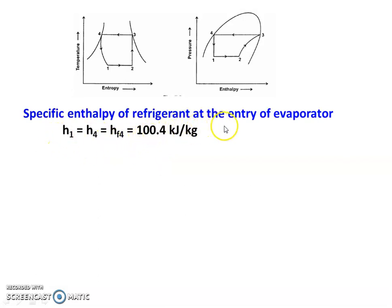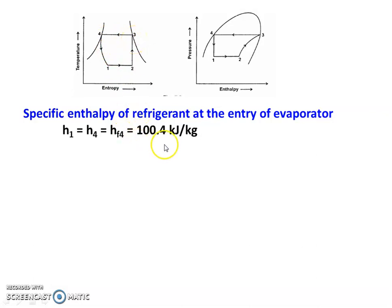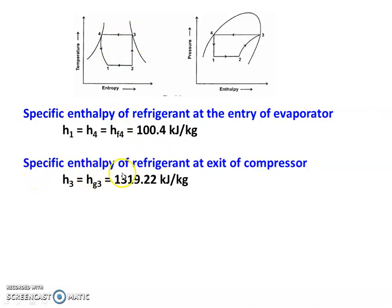The specific enthalpy of refrigerant at the entry of the evaporator: H1 equals H4, because enthalpy remains constant during the expansion process. H4 is on the saturated liquid line, equal to Hf at T4 equals 25 degree Celsius, giving 100.4 kilojoules per kilogram. The specific enthalpy at the exit of the compressor H3 equals Hg3, since point 3 is on the saturated vapor line, which equals 1319.22 kilojoules per kilogram.